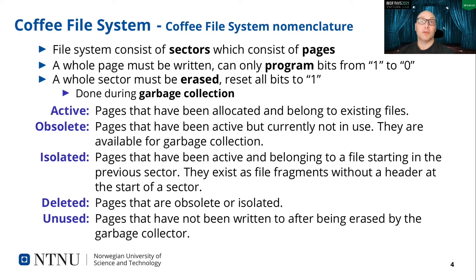A garbage collection routine runs when the file system needs to allocate more pages than are available, erasing as many sectors as possible. An active page is allocated to a currently existing file version. An obsolete page was once active but no longer belongs to an existing file version and is free to be garbage collected. If a file extends into another sector and the first sector is erased, the remaining pages are marked as isolated pages—file fragments without a file header, always at the start of a sector. Unused pages are unallocated, erased pages where all bits are set to 1.